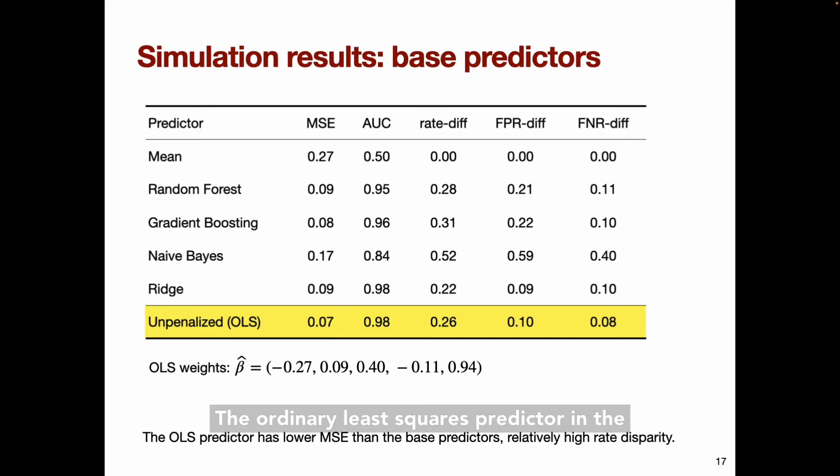The ordinary least squares predictor in the last row aggregates all five of these base predictors with no fairness penalties, so it will provide a baseline for the penalized predictors. As expected, the OLS predictor improves on the mean squared error of the base predictors. It has a high rate difference, so it's not particularly fair in that sense, but of course we haven't yet imposed a fairness penalty, so there's no reason that it should be.